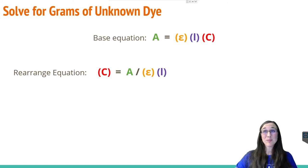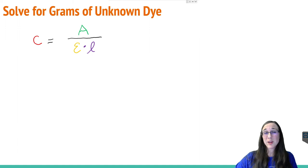...we can now see that the absorbance is divided by our epsilon, our extinction coefficient, times the length of the cuvette, which was one centimeter for this lab. So now that we have the rearranged equation, let's go through the units and make sure it all makes sense.